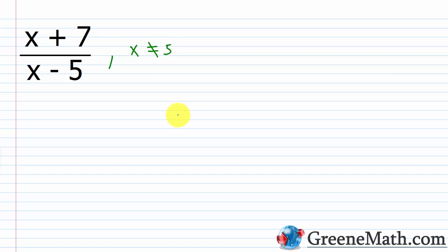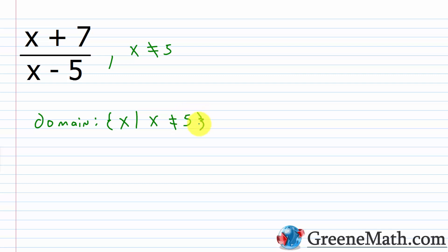A fancier way to do this is to state the domain. The domain, in case you haven't seen anything with functions yet, is the set of allowable x values — what is allowed to be plugged in for x. Everything in terms of real numbers can be plugged in for x except for 5. So the domain is the set of all real numbers x such that x does not equal 5. Anything you want to plug in for x is fine except for 5, because it makes the denominator 0.